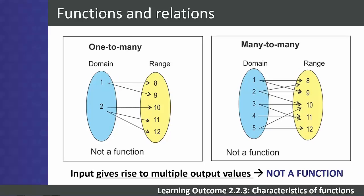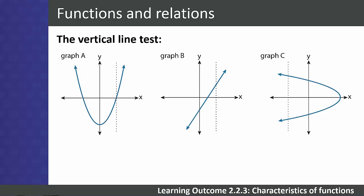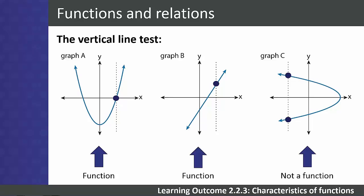The vertical line test is a useful way to identify whether a graph is a function. If a vertical line moving from left to right through a graph ever touches the graph at more than one point, the x value is mapped to more than one y value. Graph A represents a function, graph B represents a function, but graph C is not a function.